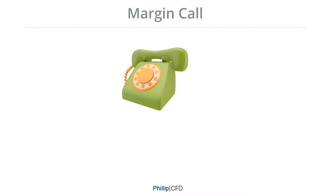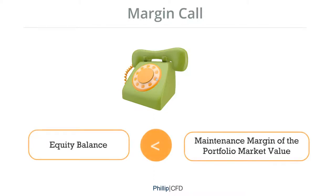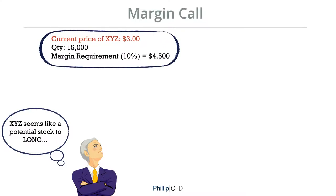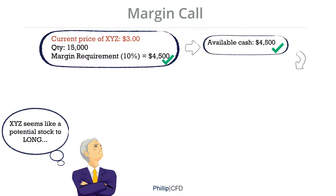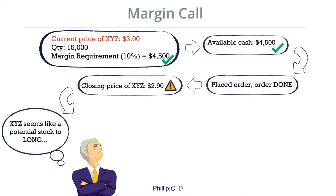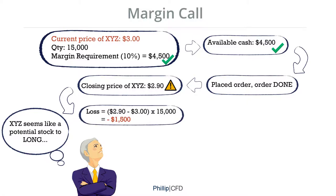Moving on to margin call. Margin call will be triggered when your equity balance falls below your maintenance margin of the portfolio market value. You will be given 2 business days to fulfil your margin call. For example: you have a bullish view on XYZ, the current price of XYZ is $3, your desired quantity is 15,000 contracts, and the margin requirement for this contract is 10%, which is $4,500. End of the day, the closing price for XYZ becomes $2.90, leading to a paper loss of $1,500.